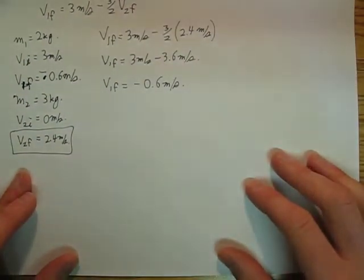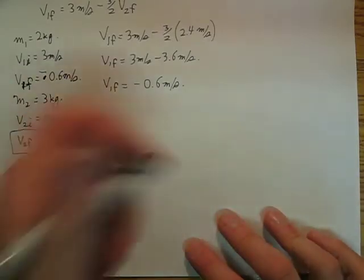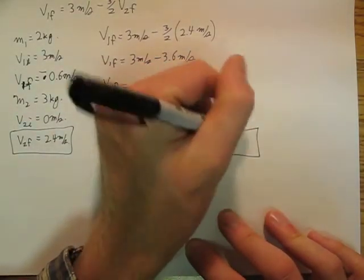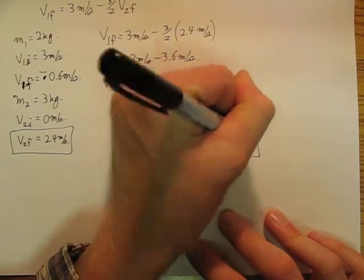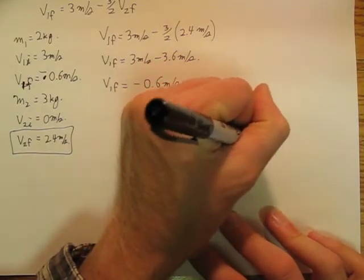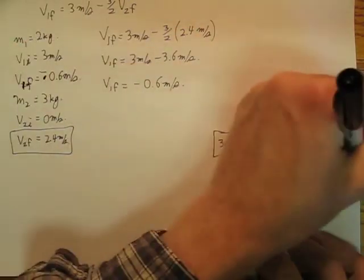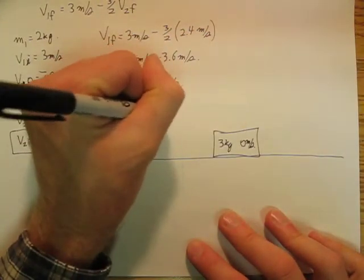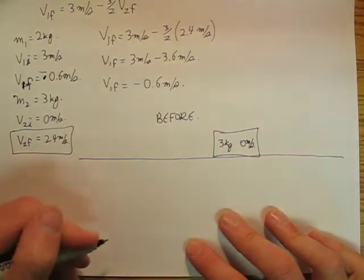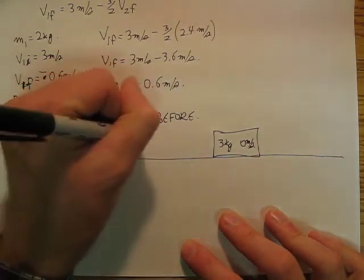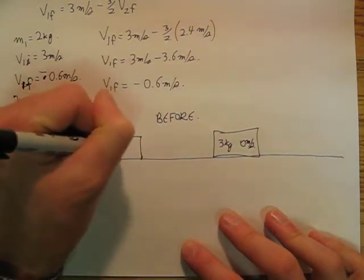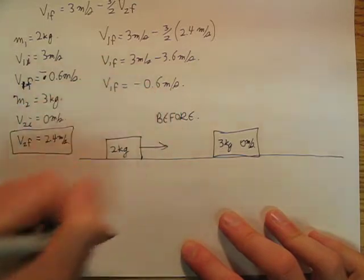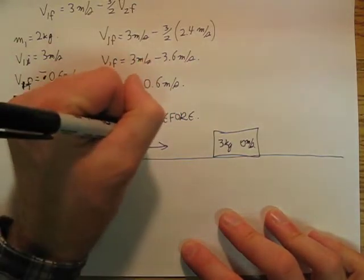So if we look at it, we have a 3 kilogram block has 0 meters per second that's sitting there, and we're going to call this before. And we have a 2 kilogram block that's going in at 3 meters per second.